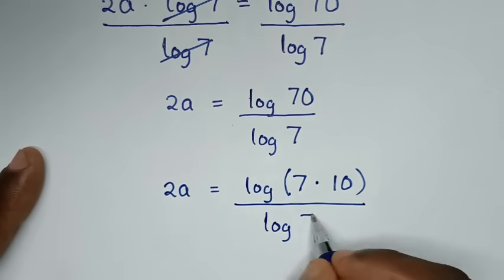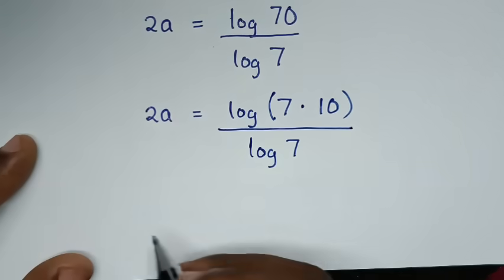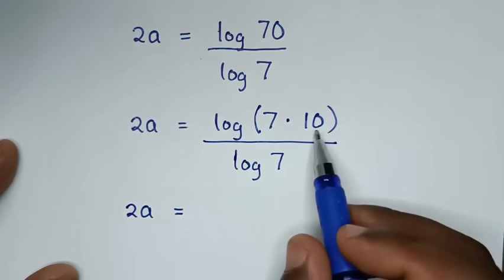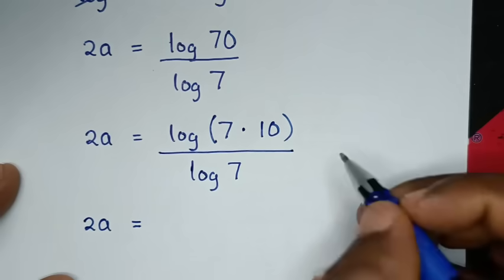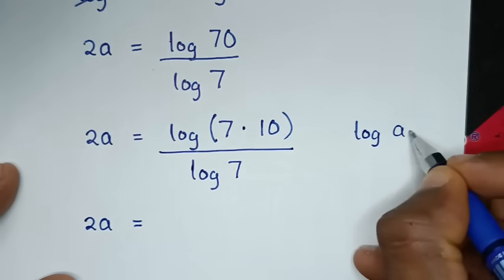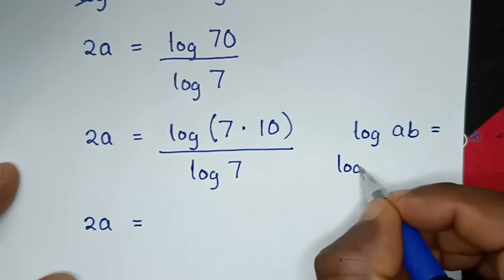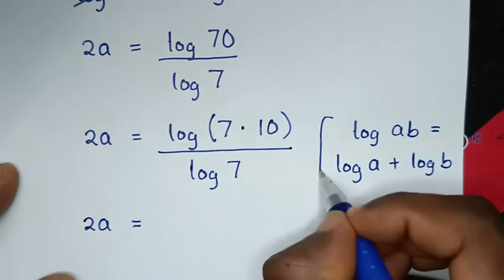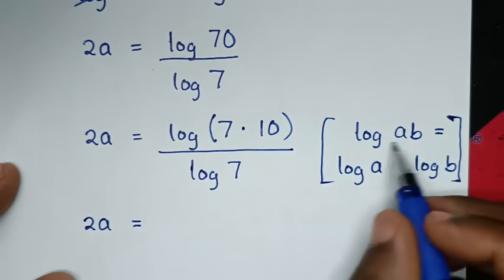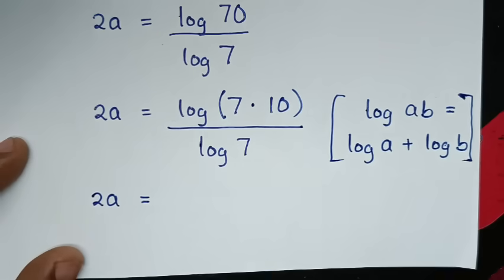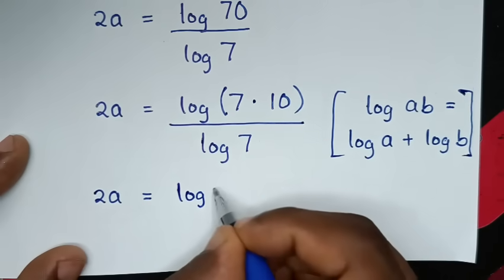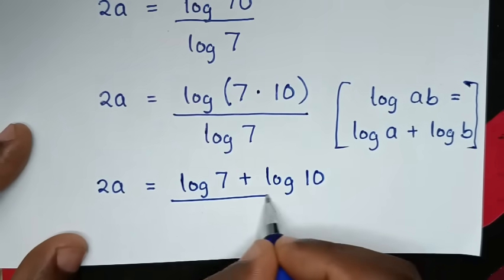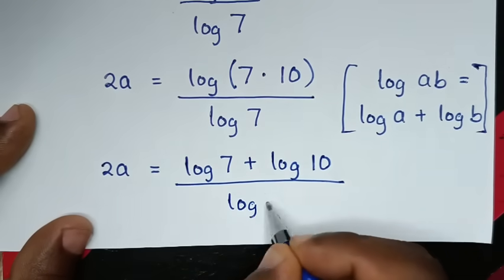Then in the next step, 2A is equal to log of 7 times 10. This part is in the form of log of A times B, which is equal to log of A plus log of B. So applying this rule, it will be log of 7 plus log of 10, over log of 7.